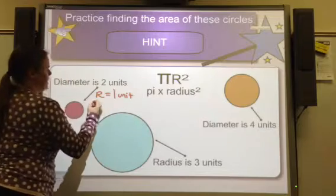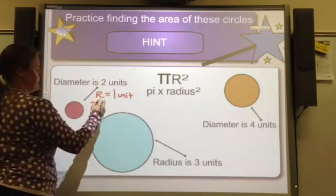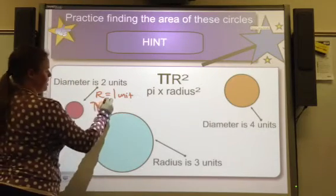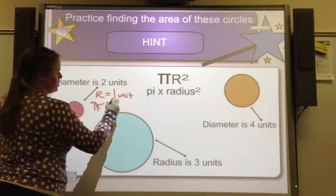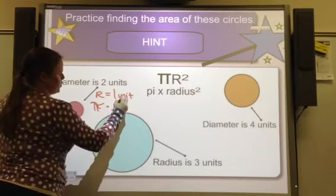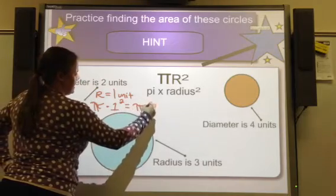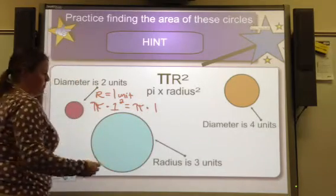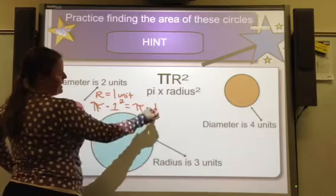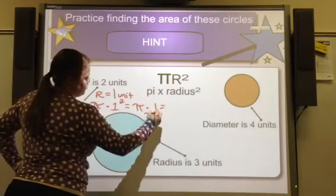So the formula would be pi times r, which is 1, and I square that. So it's pi times 1, because 1 times 1 is 1. And 3.14 times that is 3.14.